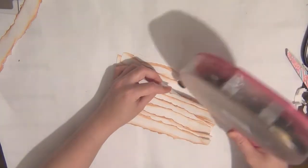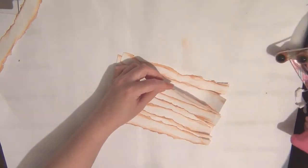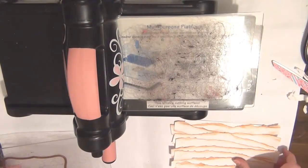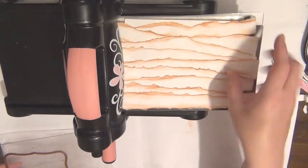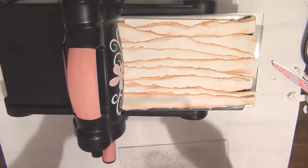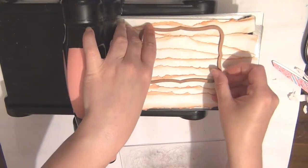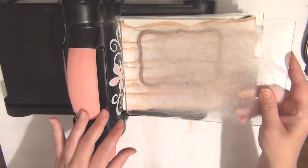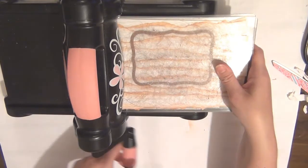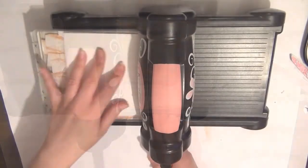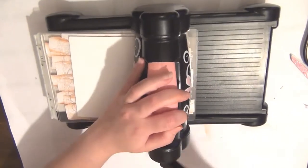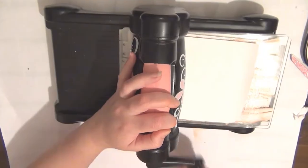Once you have that all done, just run this through your Big Shot with your die. I'm going to be using my multi-purpose platform with all tabs on as well as my cutting plates, and I'm just going to add a little piece of paper on top of that just to make sure that it really cuts all the way through.